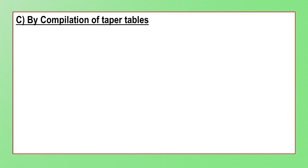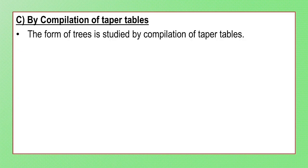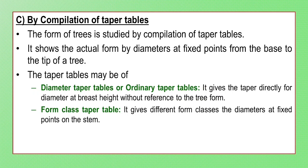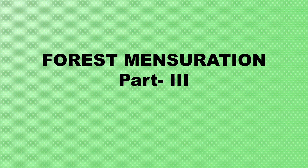By compilation of taper tables: the form of trees is studied by compilation of taper tables, which show the axial form by diameter at fixed points from the base to the tip of the tree. Taper tables may be ordinary taper tables or form class taper tables. Ordinary taper tables give the taper directly for diameter at breast height without reference to tree form. Form class taper tables give the diameters at fixed points on the stem for different form classes.